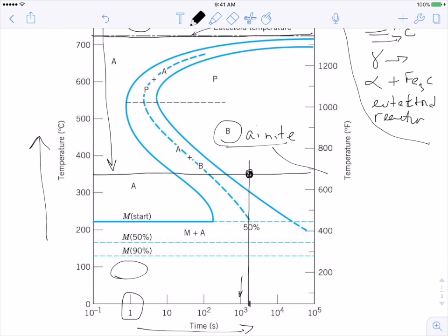Bainite is a microstructure that consists of ferrite and Fe3C. It looks different than perlite, which had those sort of lamellae, those parallel little sections. Bainite looks more like almost a dendritic look. The alpha and the Fe3C are arranged with one another differently for bainite than perlite.